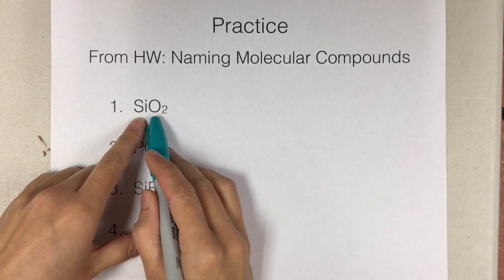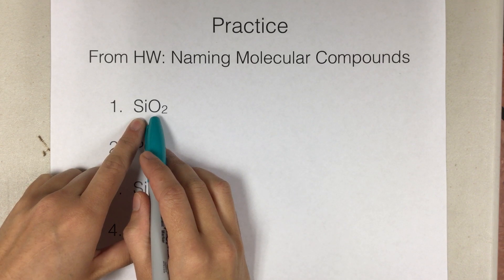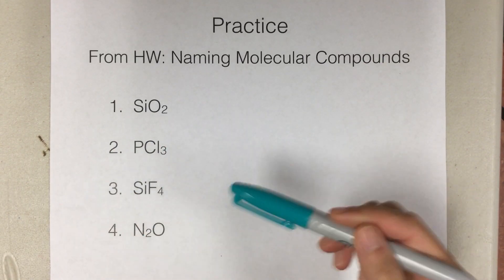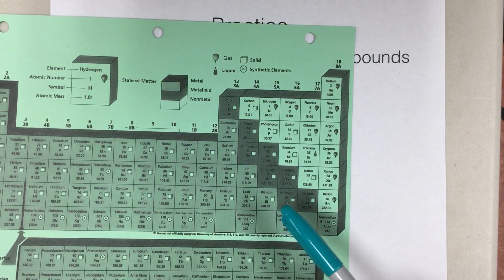Binary means there are two elements in the compound, and since they're molecular, they contain two non-metals. So you'll notice in all of these examples and on all your homework it's only elements that are non-metals in this area of the periodic table.